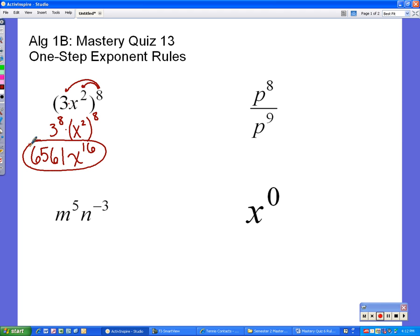The next one, let's move over to the right here. p to the 8th over p to the 9th. Now this problem is a division of the same base, matching bases. And the rule that we have is we subtract the top exponent minus the bottom exponent. So essentially the base stays p and we're subtracting 8 minus 9, which means we're ending up with p to the negative 1.